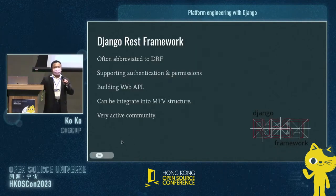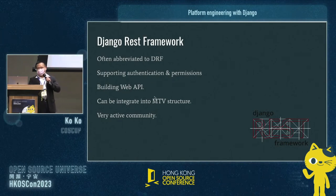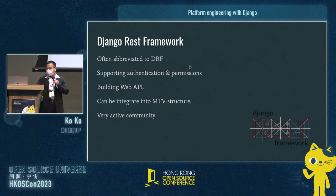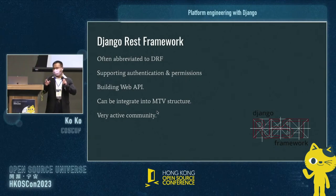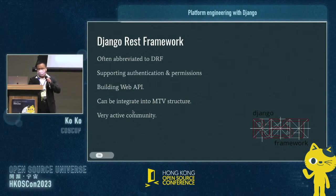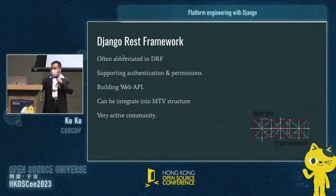In Django, you can also use a web API via the Django REST Framework, often abbreviated DRF. It supports authentication and permissions, and you can use it to build web APIs very easily. It can be integrated into the MTV structure. We usually use the MTV structure but with the REST framework. It also has a very active community, so you can get lots of support.